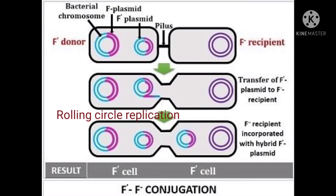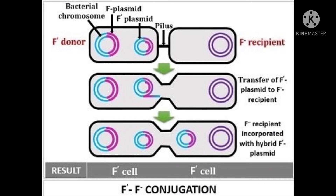So this F' plasmid in the F' cell replicates through the rolling circle model of replication and transfers a copy of this plasmid into the F- cells. This transmission process is similar to that of F+ F- conjugation and Hfr F- conjugation. The process is almost similar.